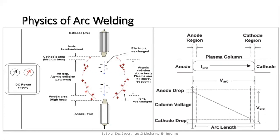Now, coming to the physics portion — between the cathode and anode there is a gap, and in this gap the arc is generated. I have mentioned this is the ionized gas column. Please refer to the right-hand side picture. There are three portions: the plasma column, the anode region, and the cathode region. Between the cathode and anode region, we can see collisions of particles. Negative electrons move from the cathode toward the anode, and positive ions move toward the cathode — an exchange of cations and anions. In the middle portion, we can see atomic collisions.